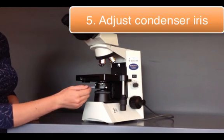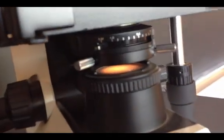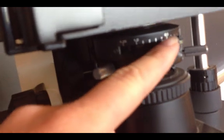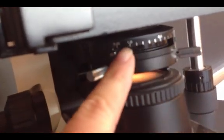Then you need to make sure that the condenser iris is all the way open as well. This is the little toggle switch right here. And you want to put it on the biggest number, which in this case is 1.25.